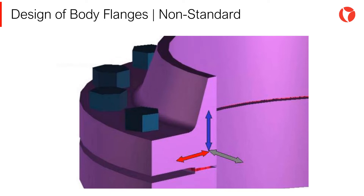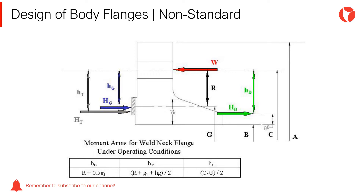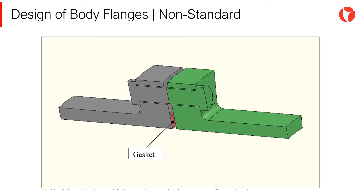Due to the effect of the internal pressure, three types of forces are acting in a flange: longitudinal, tangential, and radial force. These loads create a system of moments around the hub of the flange, which in turn induce different types of stresses. The location of the gasket in the flange plays a fundamental role in the design of these elements, since it determines the magnitude of the bending moments to be absorbed.